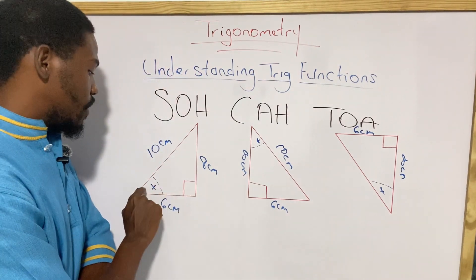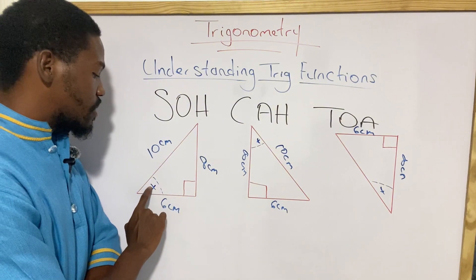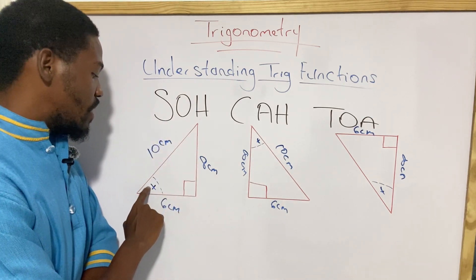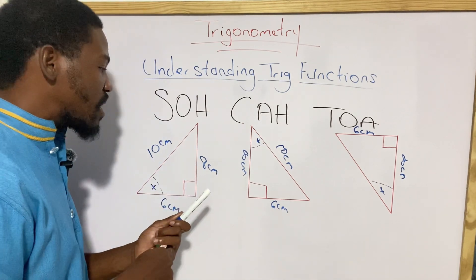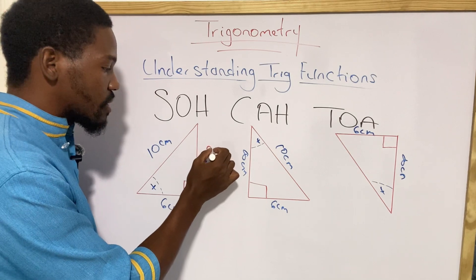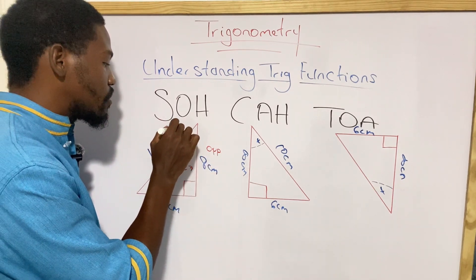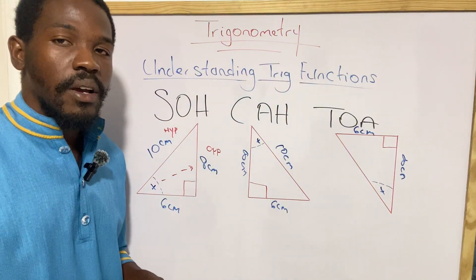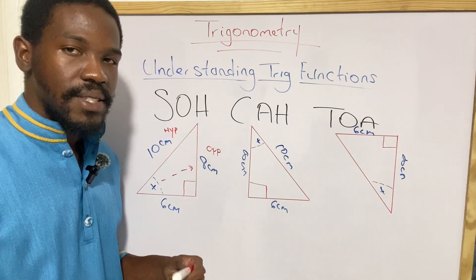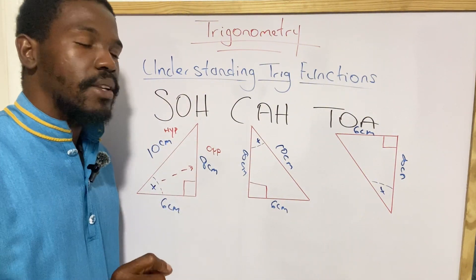Now that we have all sides labeled and the angle x identified, we're going to focus on sine. When using sine, there are two things we can find: either the length of the opposite side or the value of the angle theta. We're going to be solving either a side length or the angle.